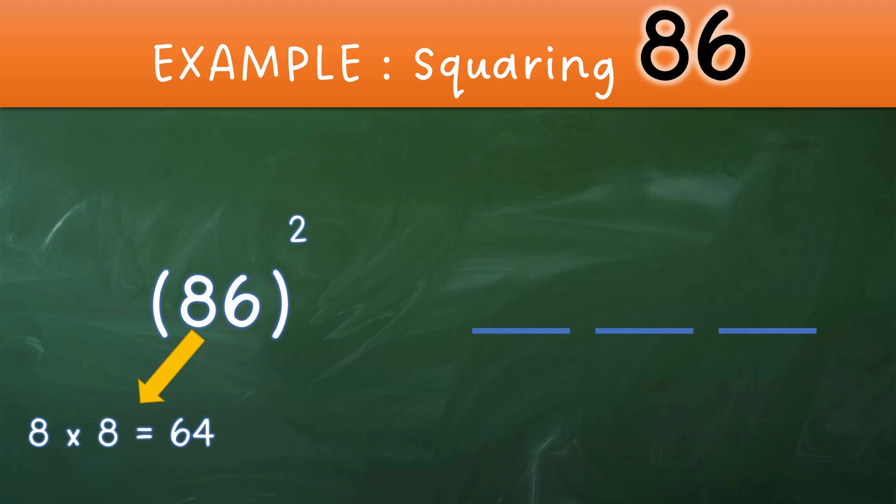We will get 8 multiplying 8 equaling 64, we put it in the left side space. Step 2 is to square the right side digit, that is 6. We will be multiplying 6 by 6 giving us 36, we put 36 in the right side blank.